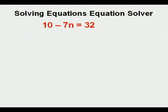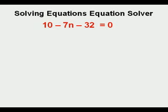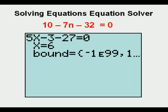First, make the equation calculator ready by getting zero on one side. The easiest thing to move is the 32 to the left of the equal sign. The positive 32 becomes negative 32 on the left side and zero remains on the right side. We get to equation solver by pressing math, then the zero key.